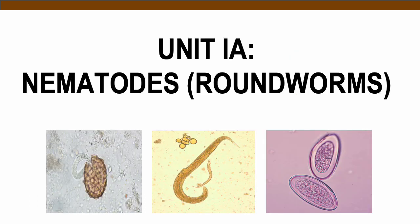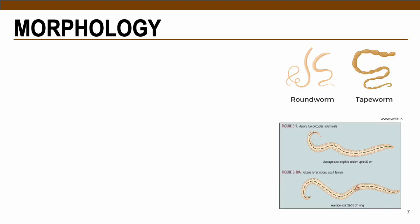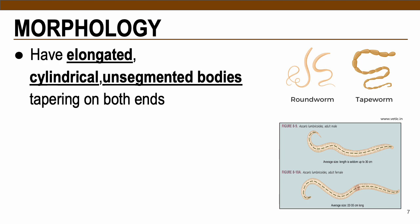Nematodes, or roundworms, are so called because they are elongated, cylindrical, with unsegmented bodies tapering on both ends. Unlike tapeworms, which have body segments, roundworms are completely unsegmented. Only a few are parasitic to humans; some are natural parasites of animals but may be accidentally acquired by humans.